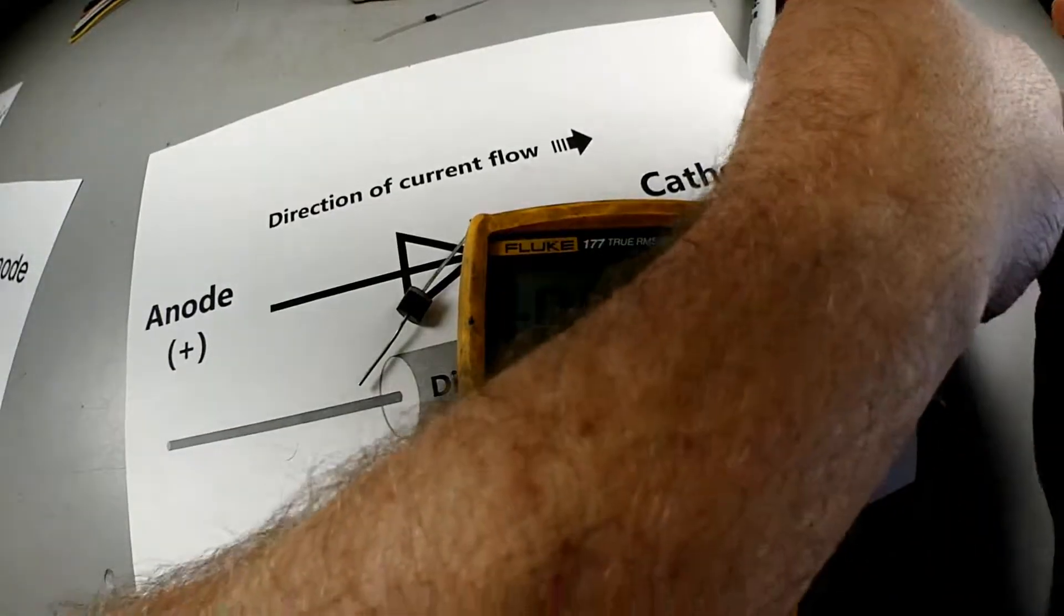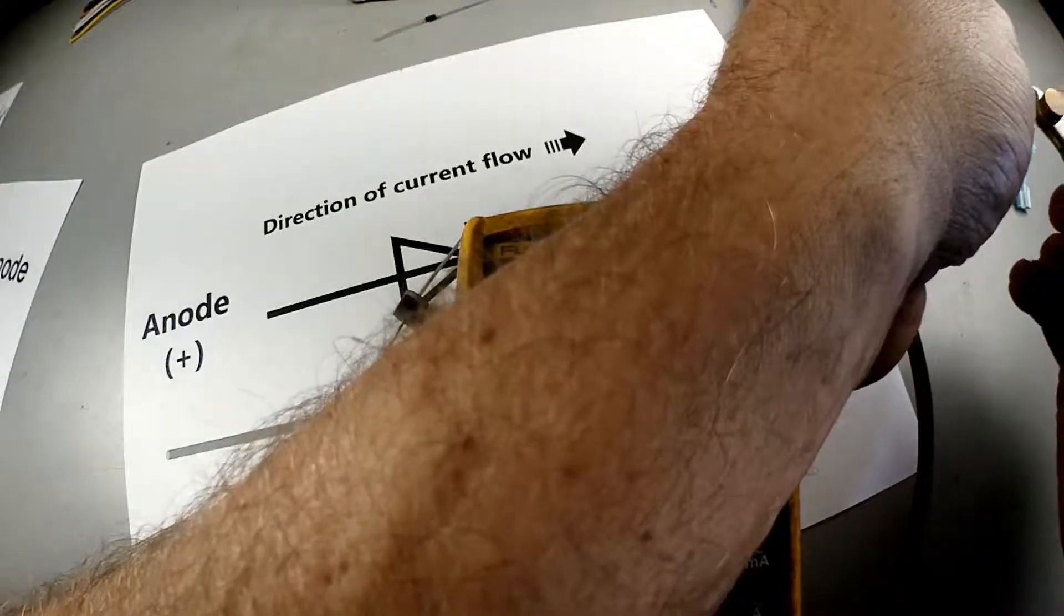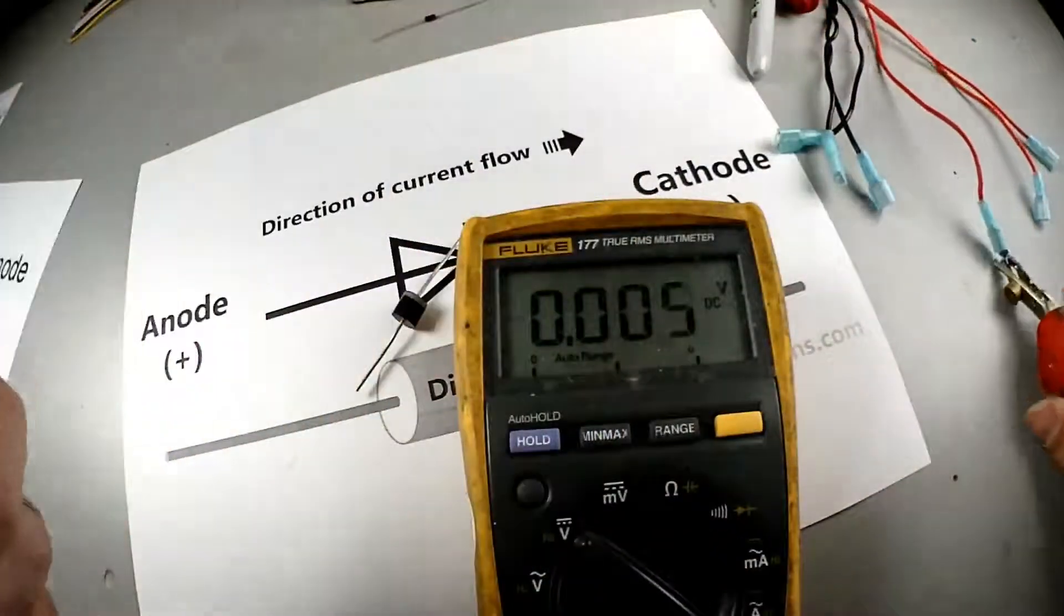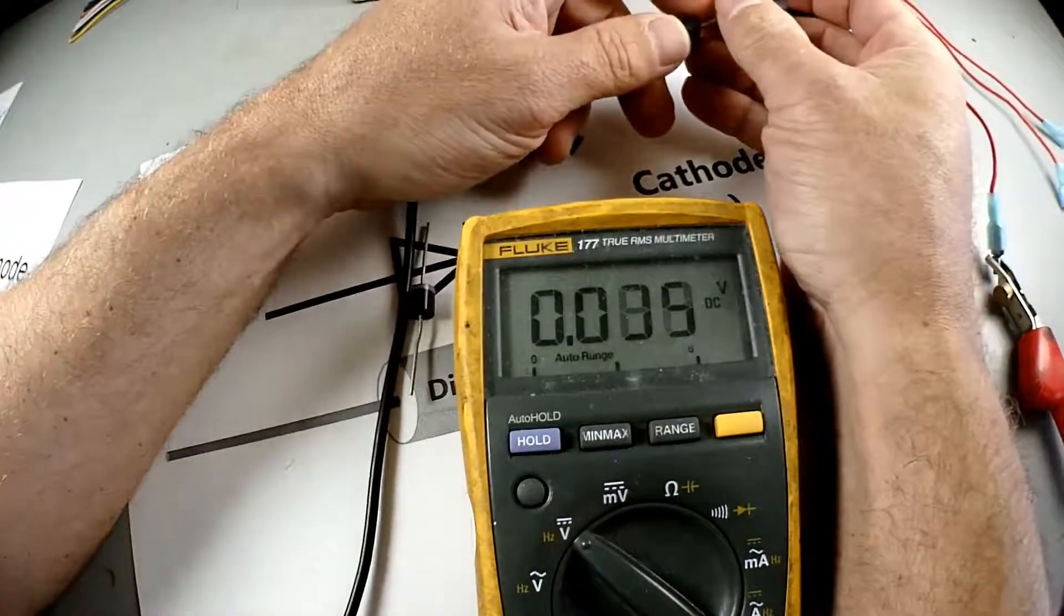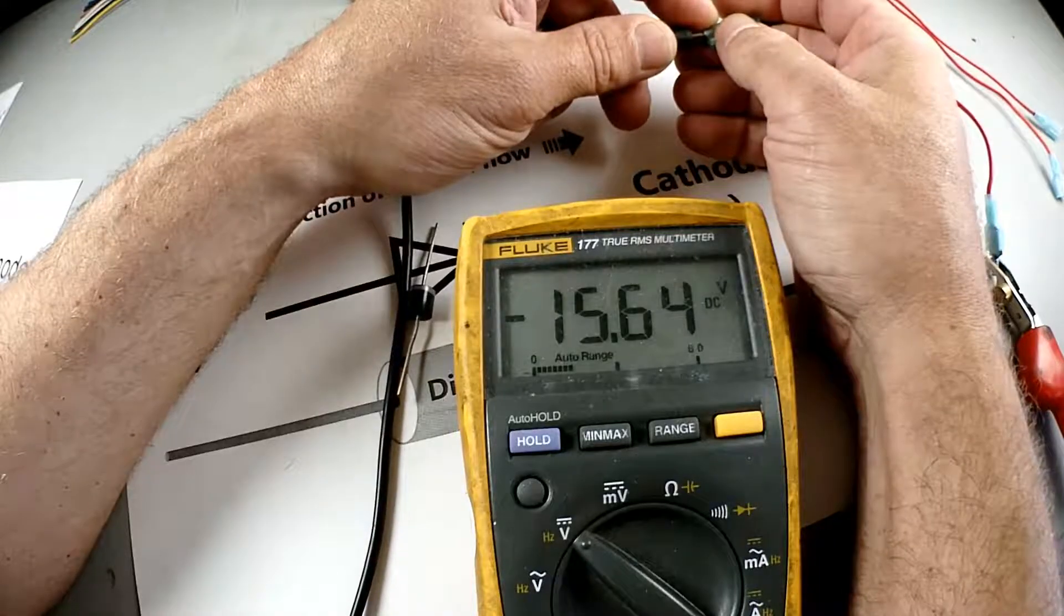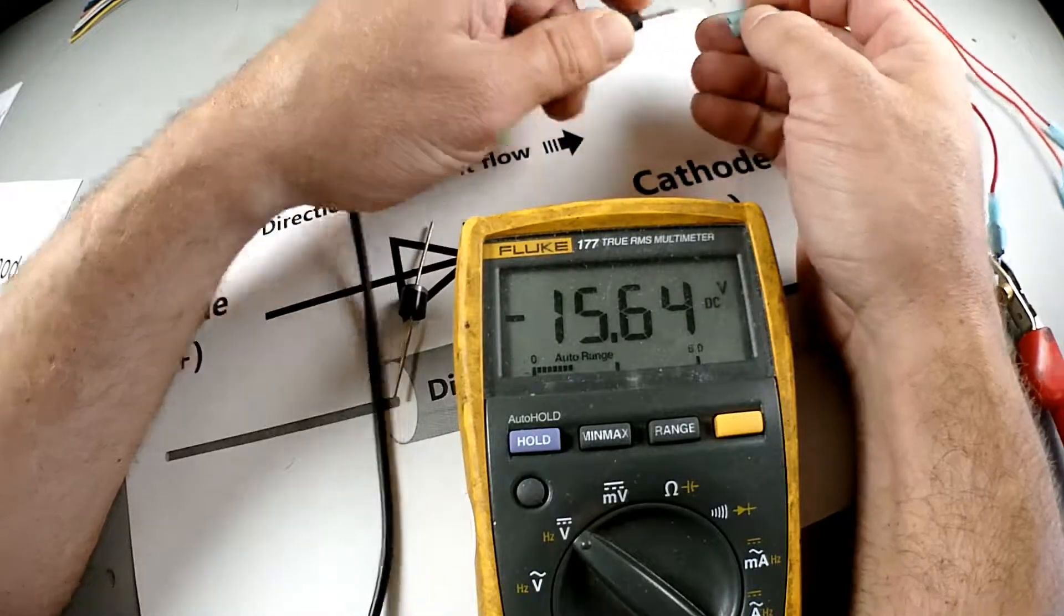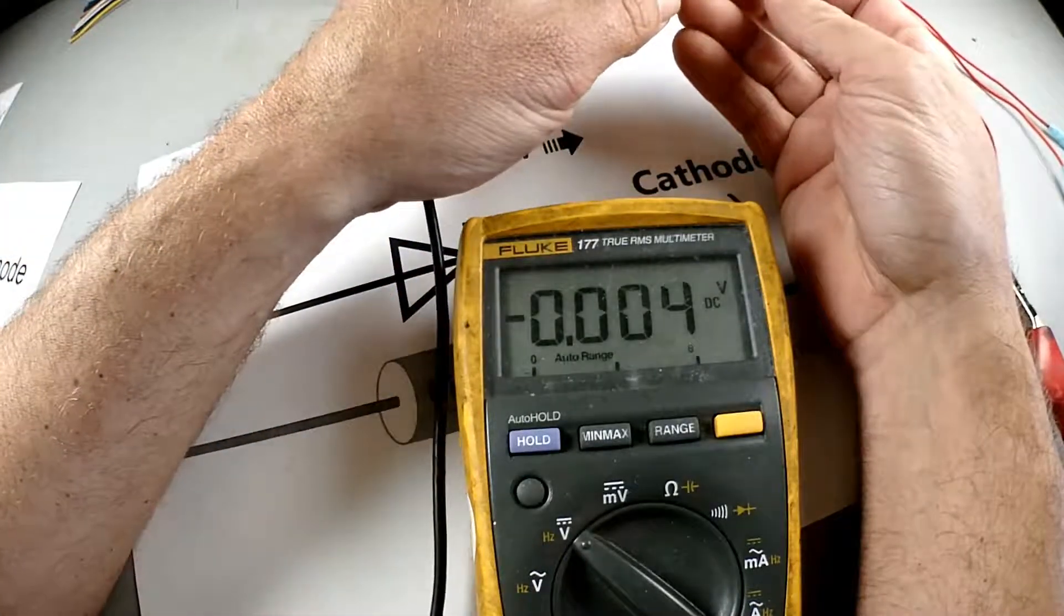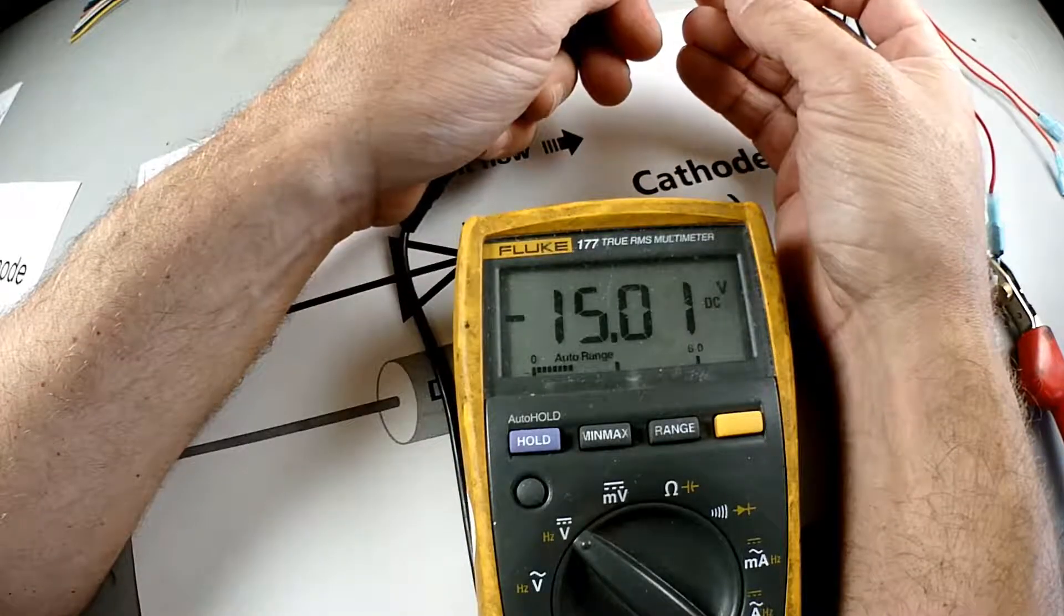Another use for a diode can be to drop voltage. So if I show this on my meter right now we're going to see it is at 15.64 volts. But if I run it through a diode I drop roughly half a volt.